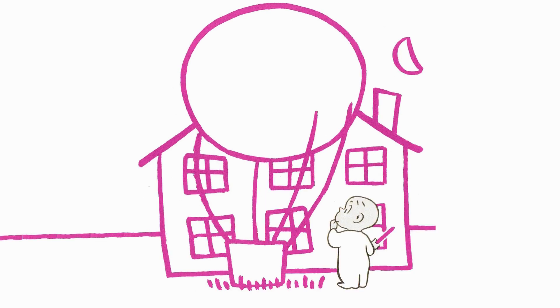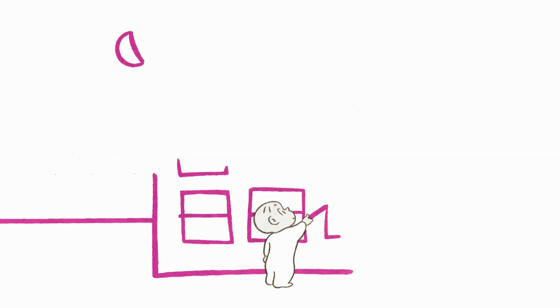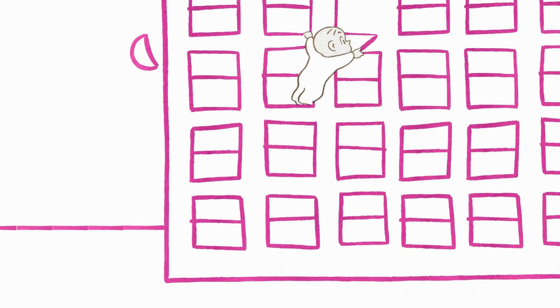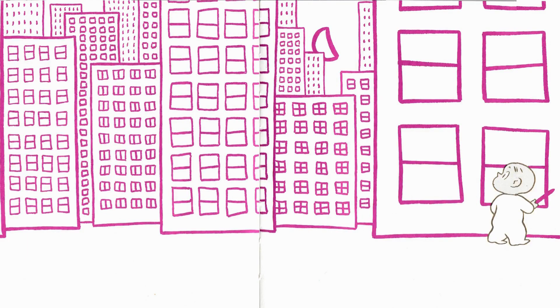None of the windows was his window. He tried to think where his window ought to be. He made some more windows. He made a big building full of windows. He made lots of buildings full of windows. He made a whole city full of windows. But none of the windows was his window. He couldn't think where it might be.